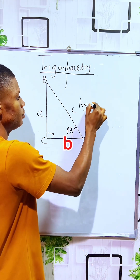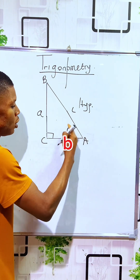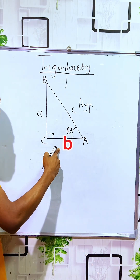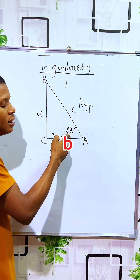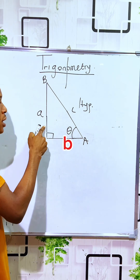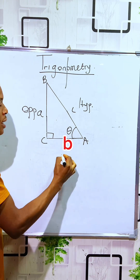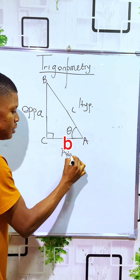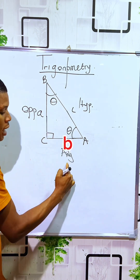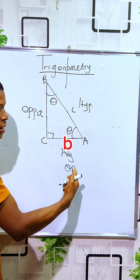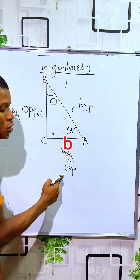Once we identify the hypotenuse, the remaining sides are named as follows: the side directly facing the angle theta is called the opposite, and the last remaining side is called the adjacent. Note that the position of the opposite and the adjacent always changes depending on where theta is placed.